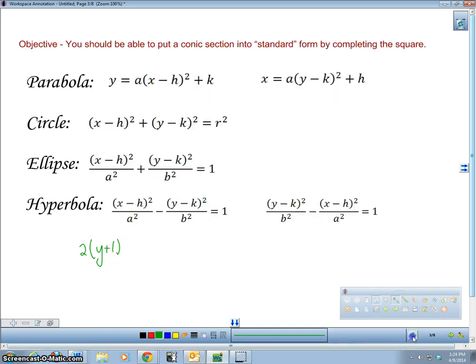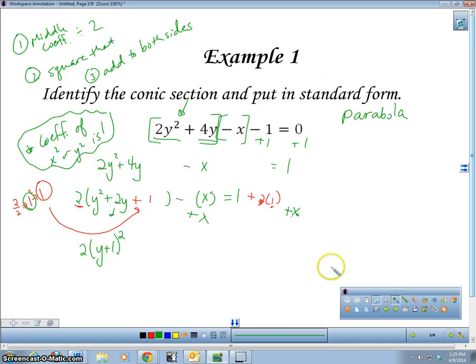And the reason I know this is going to be a parabola is because it only has one square, namely the y here. If I had two squares it would be one of our other three choices. Notice here the parabola only has one square. So then I have 2 times y plus 1 squared equals x plus 3. I want to solve for x, so I'm just going to subtract the 3 over and I'm going to have x equals 2 times y plus 1 squared minus 3 and this is my answer.